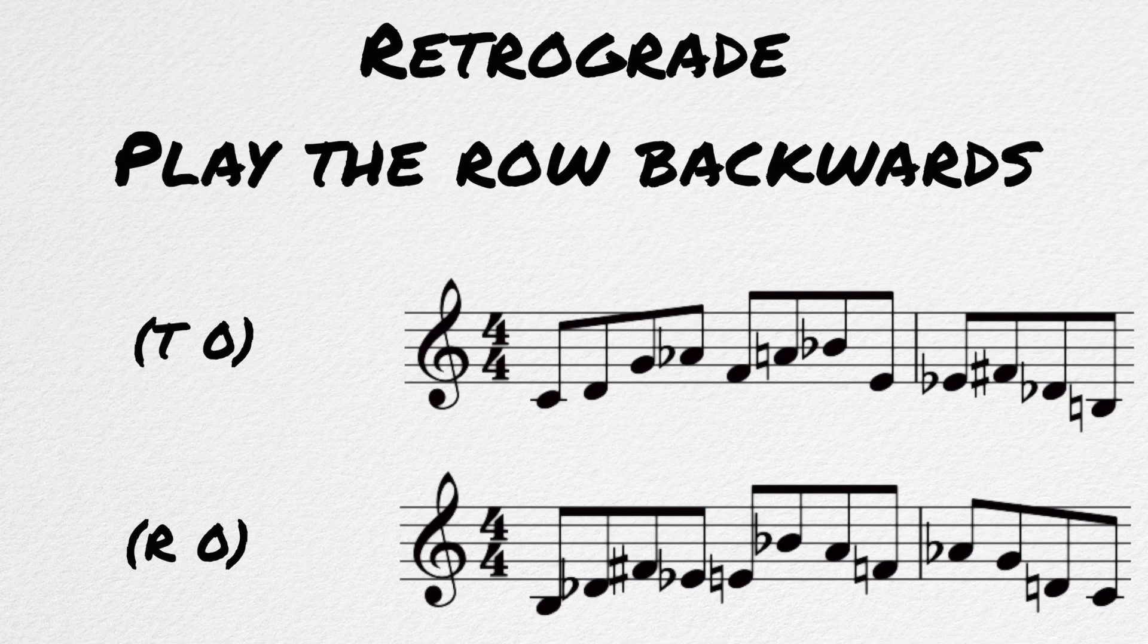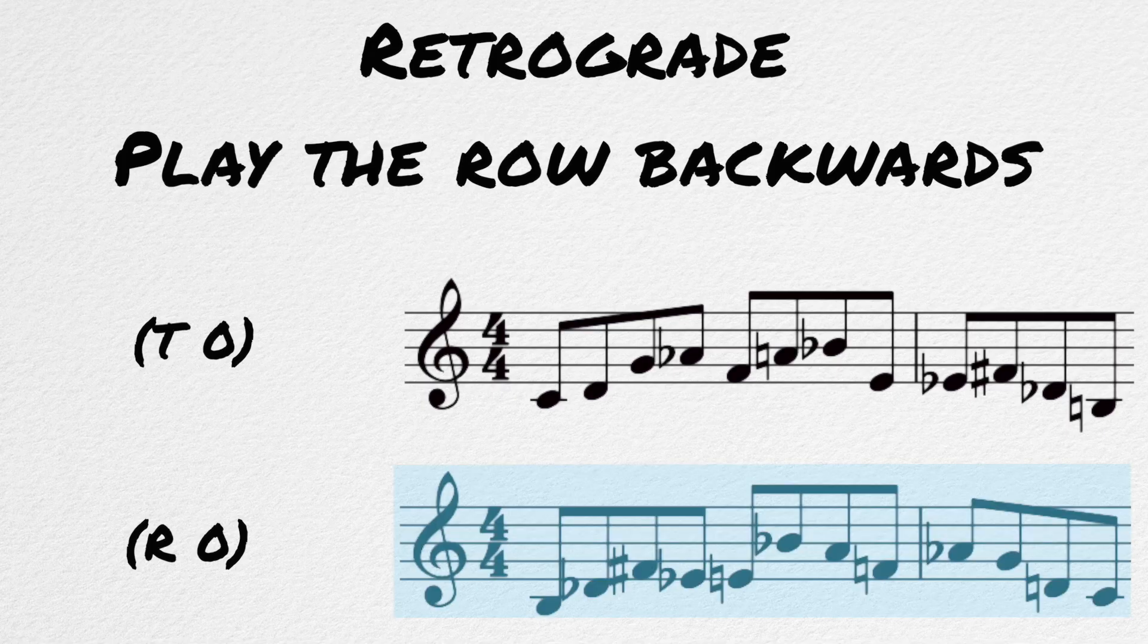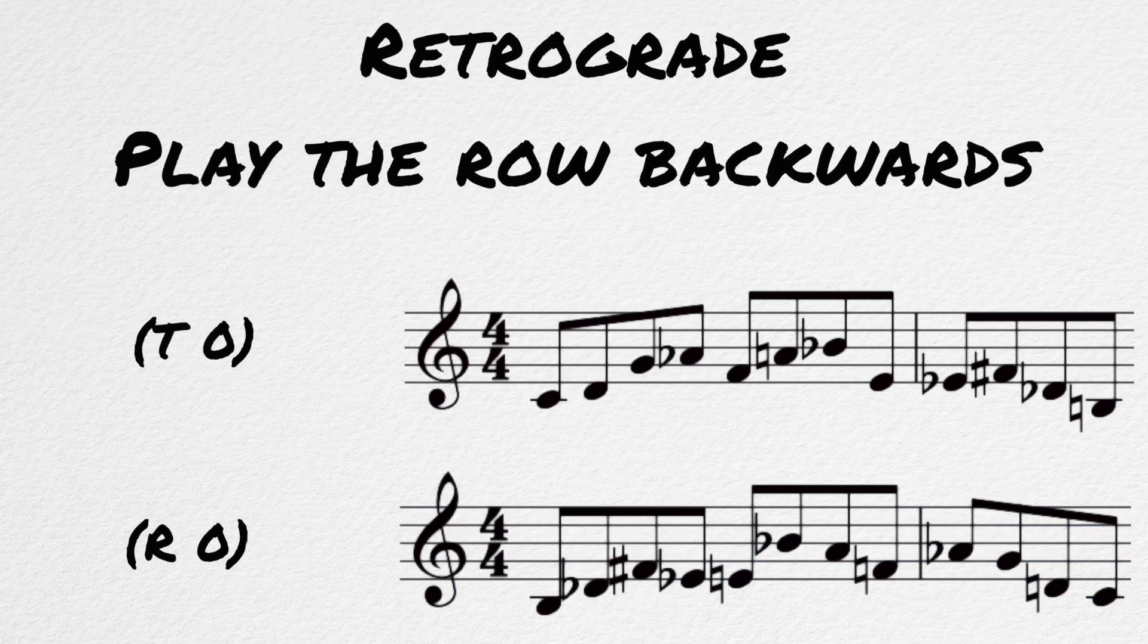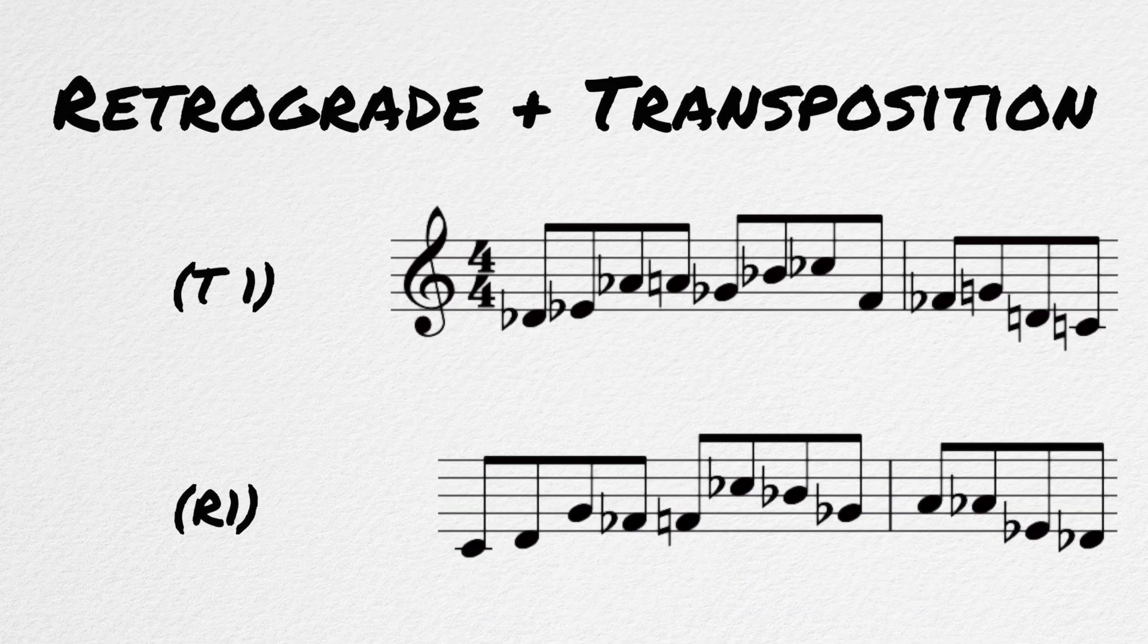We could retrograde the row, which simply means to play it backwards. So our T0 will become... And we can label this R0. The retrograde can also be combined with our transposition, like so.